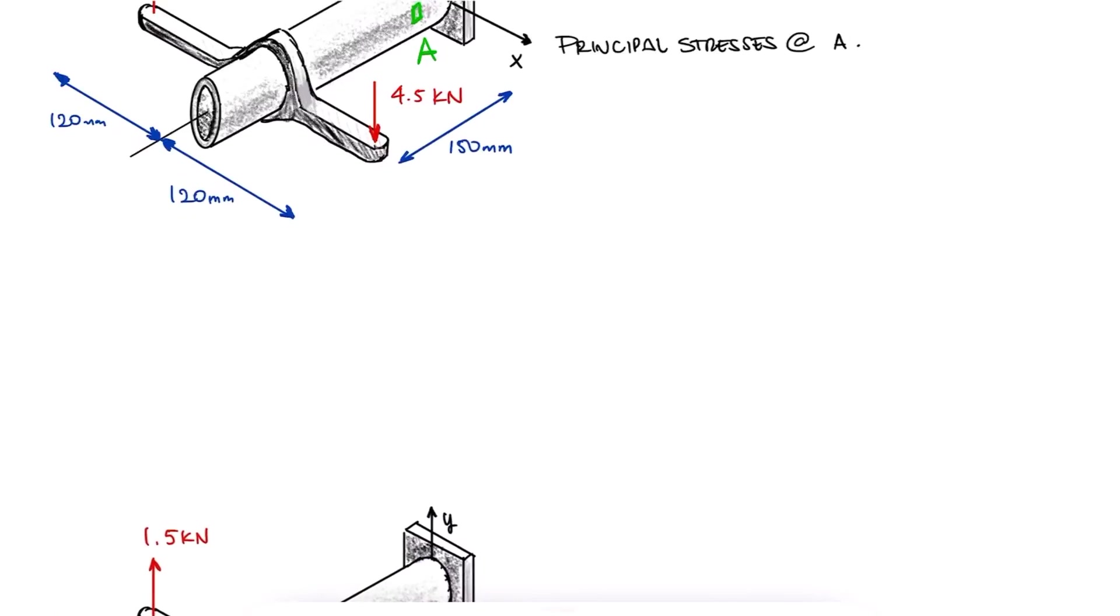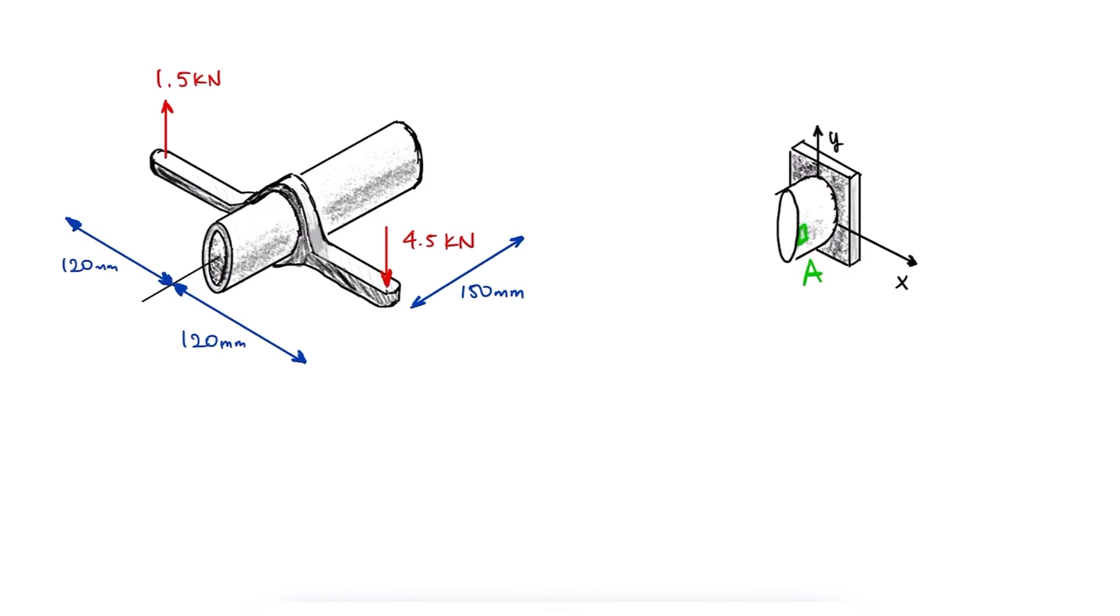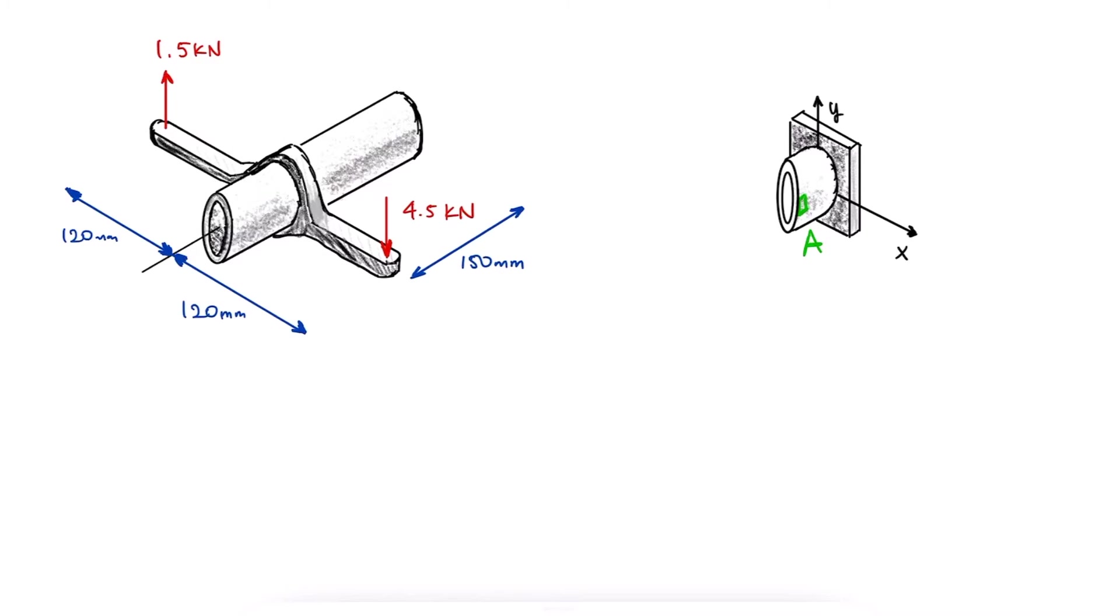Just like we did for example 1, we'll perform a cut at location A and we'll find the reaction forces with the free body diagram on the left.